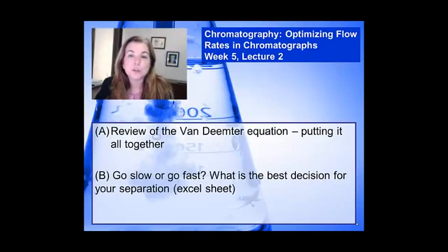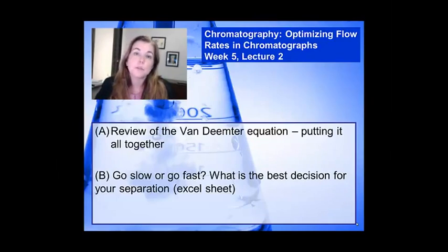Hi, welcome to Coursera's Instrumental Analysis class. I'm Vicki Colvin. So in week five we're discussing chromatography. We're going to be getting to gas chromatography pretty soon, but in this lecture I'm reinforcing and integrating some of the ideas about peak broadening with the Van Deemter equation, which we just learned about, and we're going to be looking at how do we optimize separations given that information.